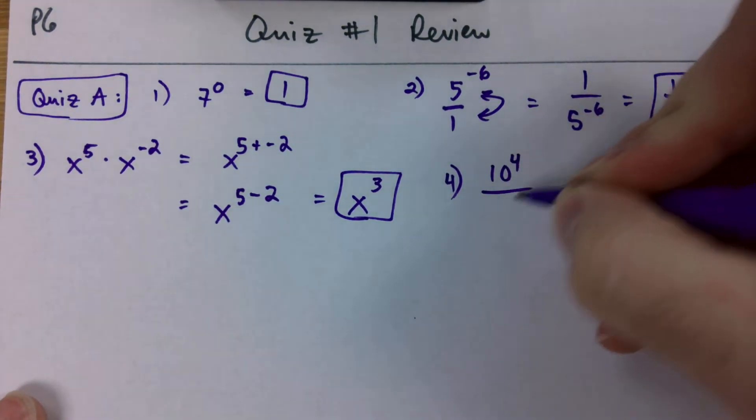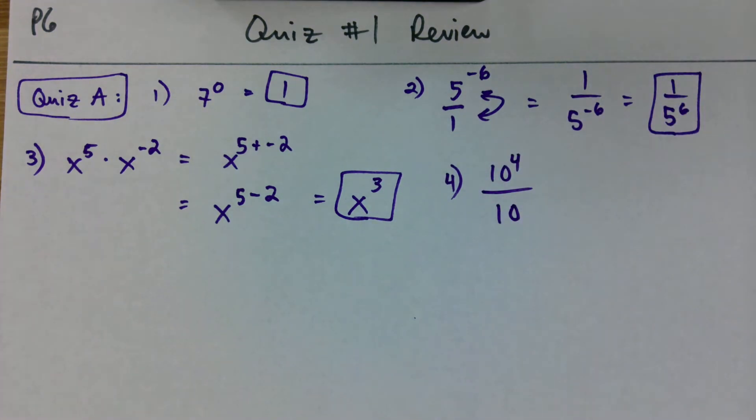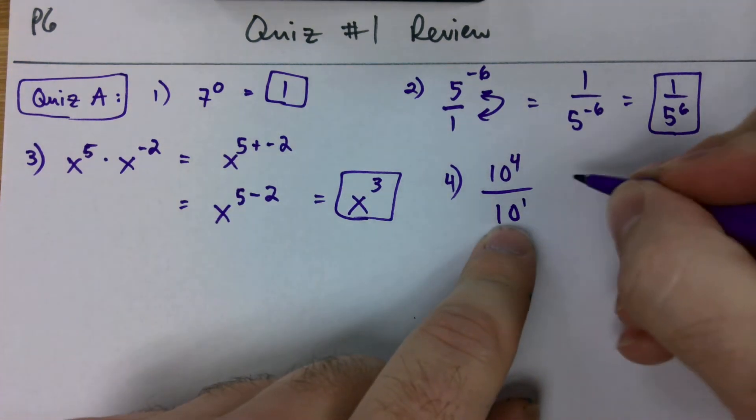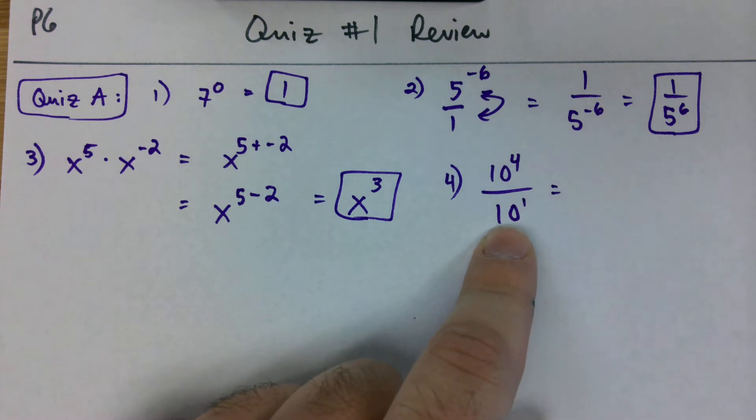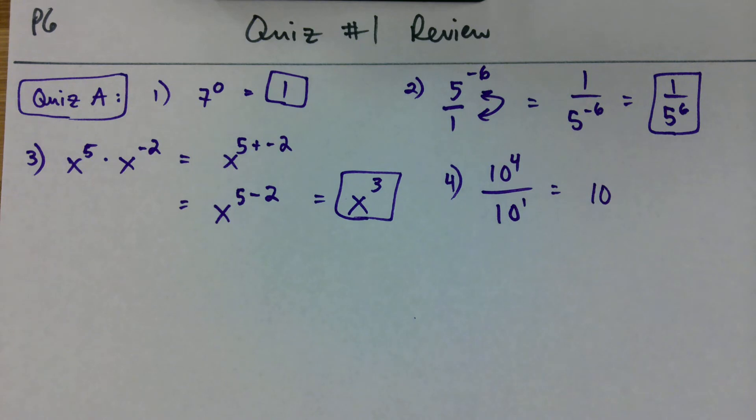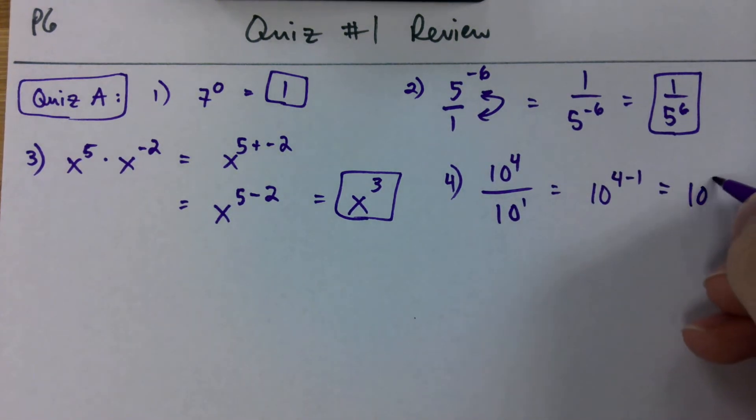Number four, we got ten to the fourth over ten. So, a lot of people get a on this one, ten to the fourth. Can't forget about this ten down here. What's the exponent on this denominator? One. Good job. What rule are we going to use? We just used the product rule. Now, we're going to use the quotient rule. Division. Quotient rule. So, we got ten to the four minus one. Subtracting down gives us ten to the third power.